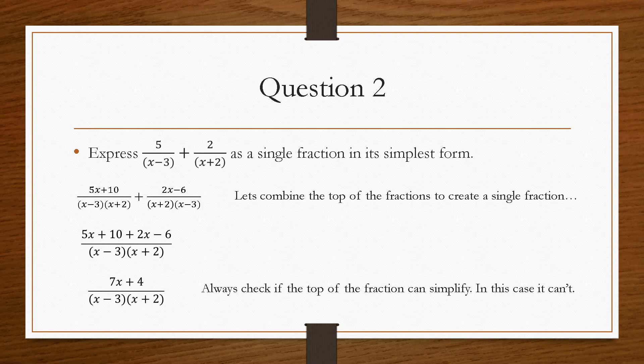However, in this case it doesn't, so that is our final answer. However, when you reach this point, always remember it's in its simplest form. So that's where we need to check, can something be cancelled or can something be factorised further? In this case, it can't. And that's how you would go about combining two algebraic fractions into one, and then simplifying.